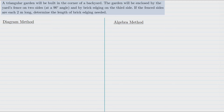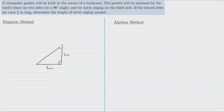We have a triangular garden enclosed by fences on two sides at 90 degrees, with the length of those sides being two meters each. The angle here is 90 degrees, and the brick edging will make the third side of the triangle. We don't know how long that side is — we're supposed to figure that out — so let's give it a label. Because it is the hypotenuse of the triangle, let's call it C.